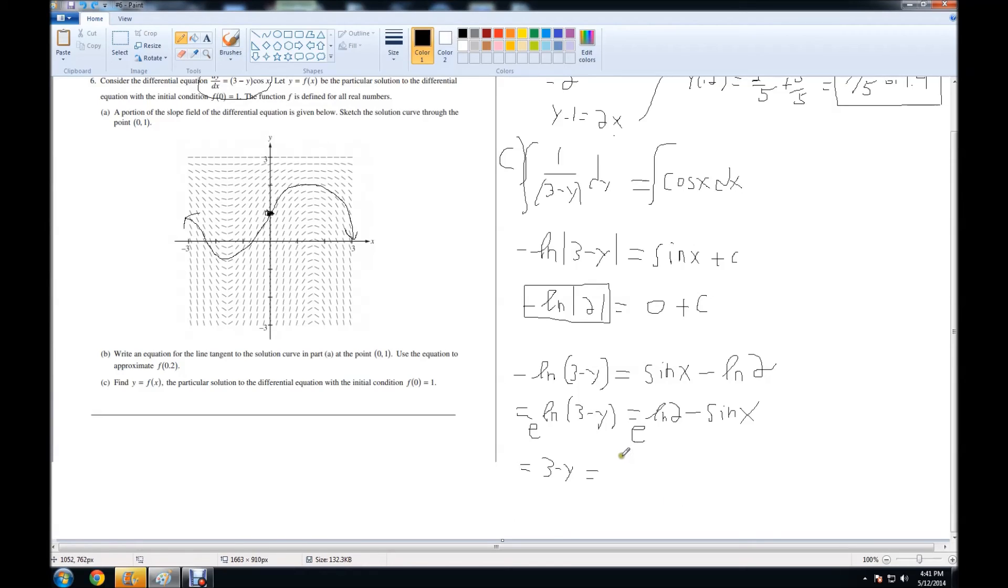I'm going to go ahead and rewrite that, and e and natural log cancel. So right now I'm going to rewrite that as just 2 over e to the positive sin(x), because this equals a fraction. This is like saying e to the natural log of 2 over e to the sin(x), and the minus makes it the fraction. So subtracting 3 and multiplying by -1, we get the final answer of y equals 3 minus 2 over e to the sin(x).